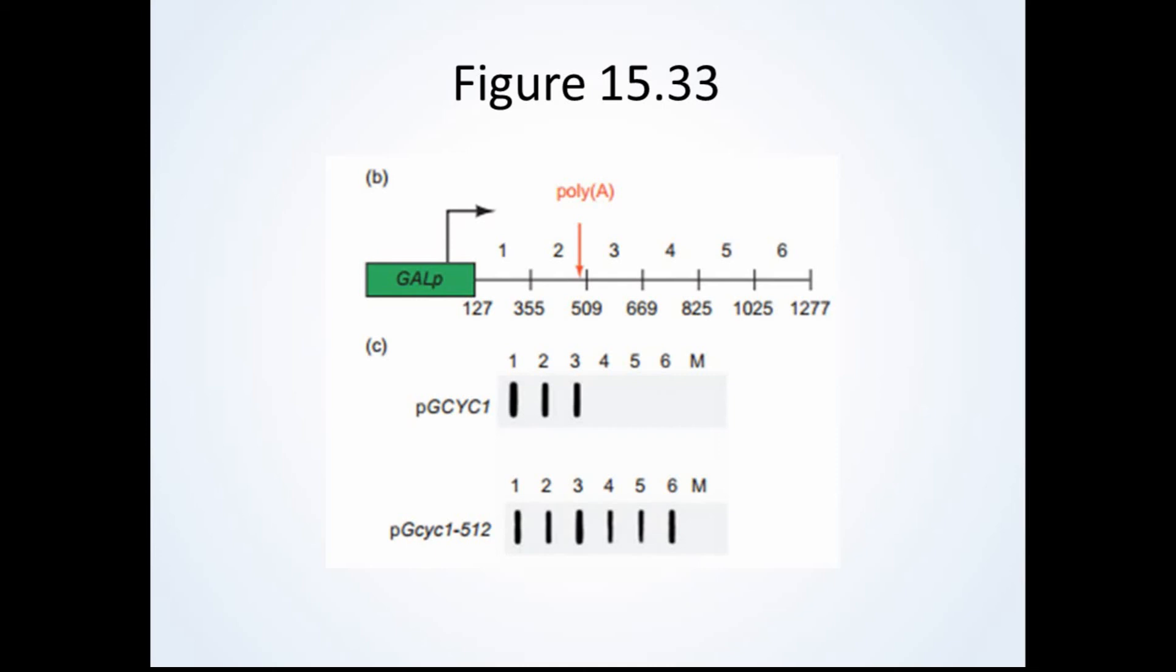These scientists decided to do a follow-up experiment and performed a nuclear run-on and a dot blot in order to test if transcription was terminated correctly. This is similar to the first experiment that we discussed with probes A through F. For this experiment, they radiolabeled RNA in wild-type and mutant cells and extracted transcripts to test with the dot blot. These mutants, again, did not have a functional polyA site for the CYC1 gene. The filter paper used for the dot blot contained immobilized, unlabeled DNA probes 1 through 6, as shown on the diagram, and also included M, a control. The labeled RNA was then added to the paper in order to see if hybridization could occur. We would not expect to see hybridization with this control because this is for a different gene.